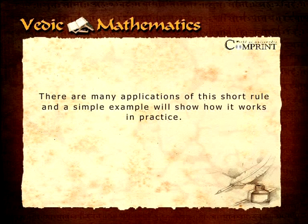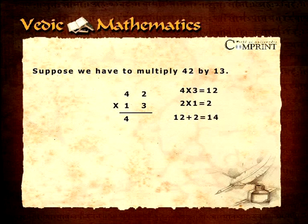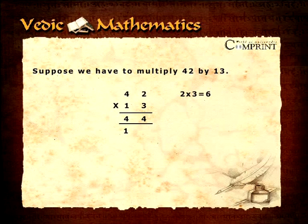There are many applications of this short rule and a simple example will show how it works in practice. If we have to multiply 42 by 13, starting at the left, multiply the two left hand most digits vertically, that is 4 multiplied by 1 equals 4, and set the answer down underneath as the left hand most part of the answer. We then multiply 4 by 3 and 2 by 1 crosswise and add these two products together: 4 multiplied by 3 equals 12 and 2 multiplied by 1 equals 2, and 12 plus 2 equals 14. Set down the 4 as the next answer digit and carry the 1 to the left. We multiply 2 by 3 vertically and set down the answer 6 as the right hand most answer digit. Add in the carry digit to give the answer 546.